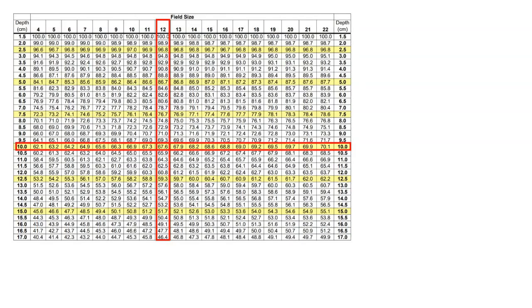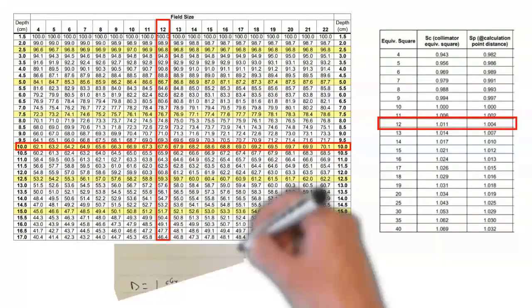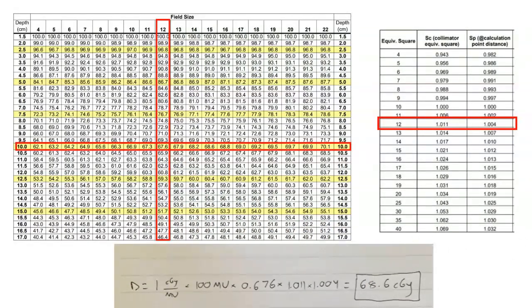Now we can look at our beam data. This is a PDD table — we go across the top and find our field size of 12, then go down the rows and find our depth of 10, and where that row and column intersect we get 67.6. Then we do the same thing for our collimator and phantom scatter factors, take those values, and plug them into the equation. Multiplying everything out, we get a dose value of 68.6 cGy. Also note that the PDD value of 67.6 is given as a percentage, so we divide it by 100 to get the relative value we actually use in the dose calculation equation.